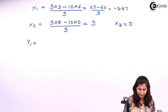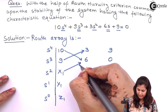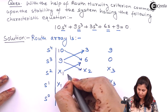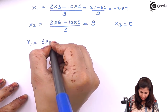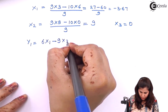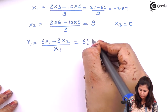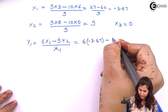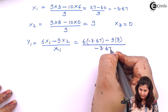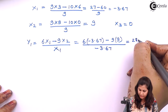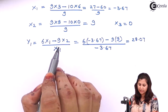Now y1 can be determined as: x1 multiplied by 6, minus 9 times x2, divided by x1. That is (6×(−3.67) − 9×9) divided by (−3.67). When we solve this, we get y1 as 28.07.